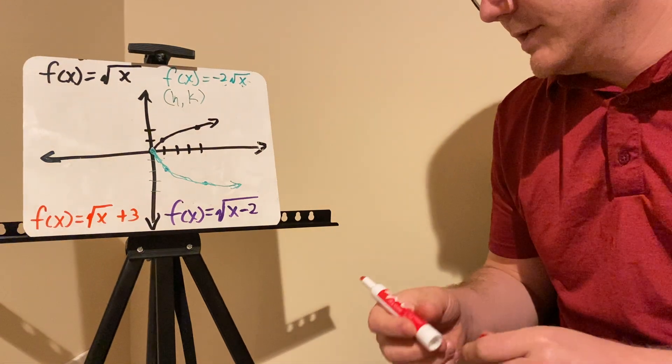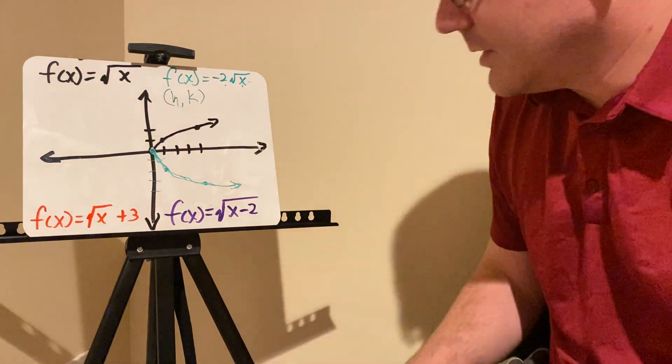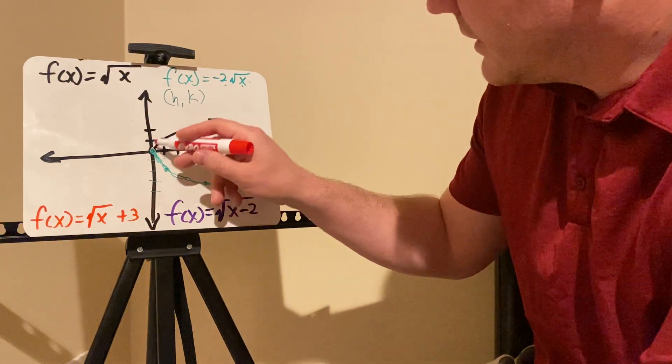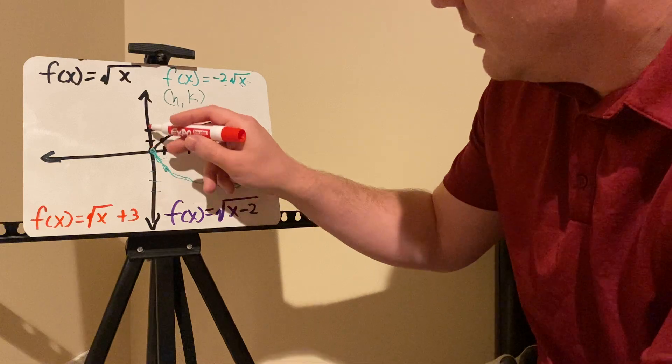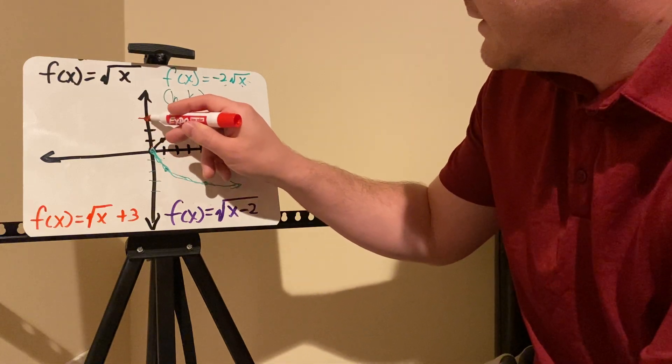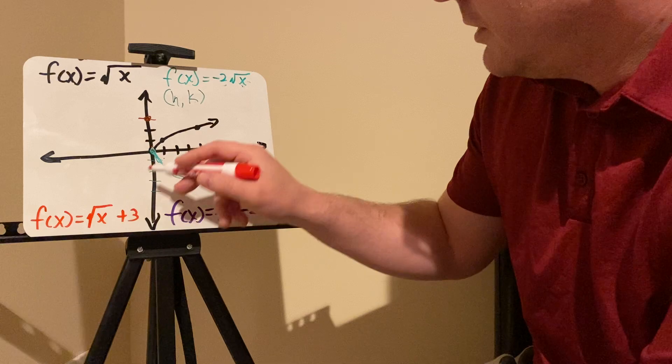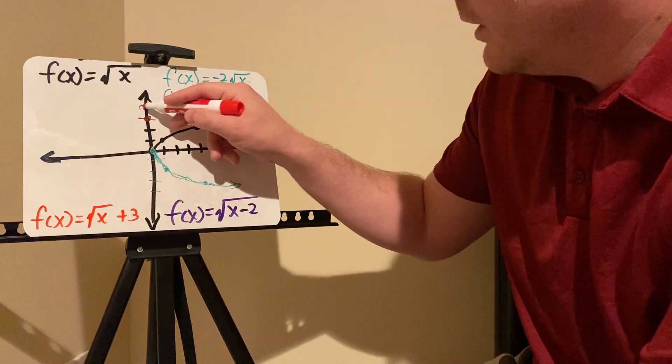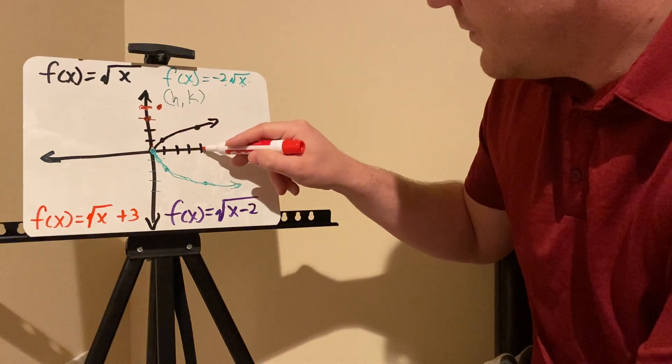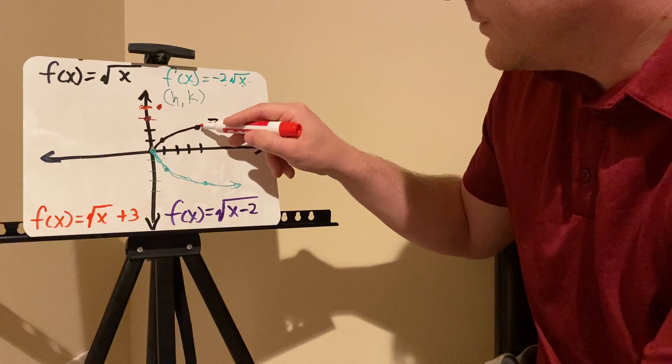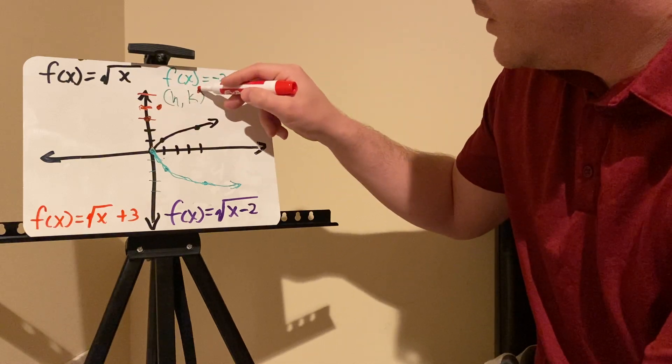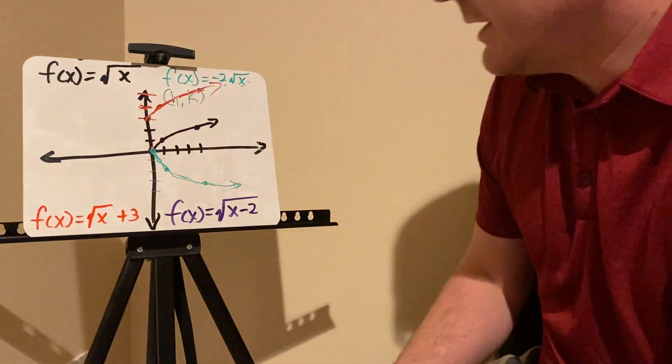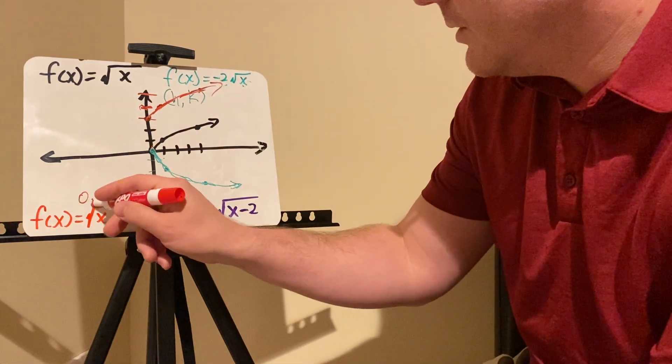f of x equals the square root of x plus 3. So again, this one's going to almost look the same as this, except you're plus 3. So your K value is 3. So you actually go 0 up to 3. When x is 0, you add 3. So that's your starting point. So when x is 1, the square root of 1 plus 3 is 4. So we go 1, 4. When x is 4, that's going to be 2, plus 3 is 5. So you end up all the way up here and it's going to look something like this. That would be that graph there with a starting point of 0, 3.